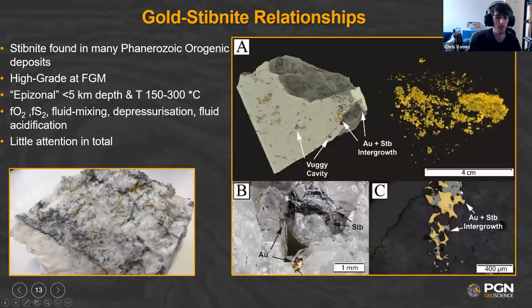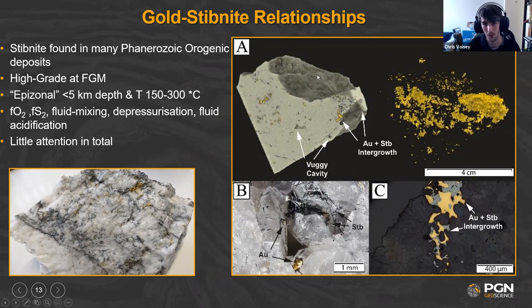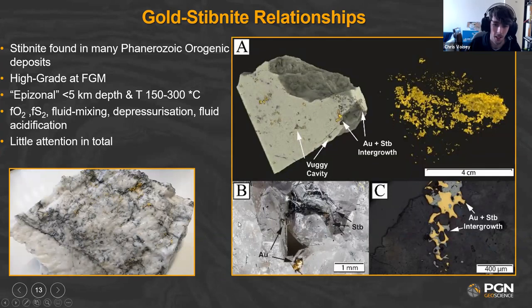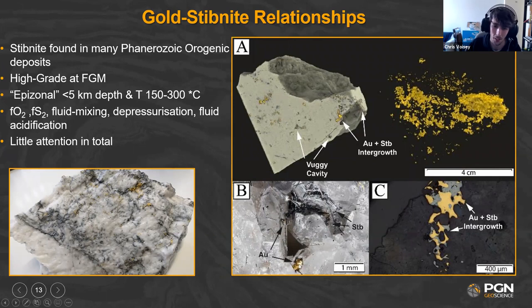Looking at the gold-stibnite relationship: this tomography image shows a quartz vein about four centimeters cubed — a 3D neutron tomography showing the gold distribution in 3D space. The thing is full of gold, with open vugs with a little stibnite, possibly some boulangerite — a lead-stibnite mineral — and gold resting on stibnite hairs or needles. In thin section it looks like intergrowths of gold and stibnite.